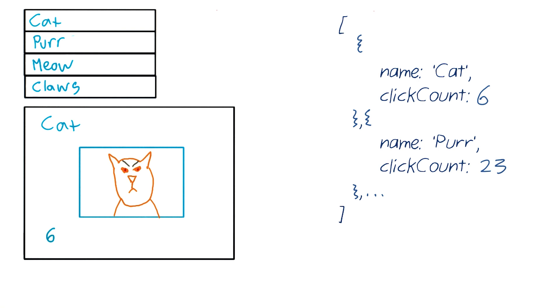Then the octopus changes the current cat in our model. Current cat gets set to this first cat. When that happens, the octopus says, hey, go ahead and render this view here. And then the current cat view gets rendered.